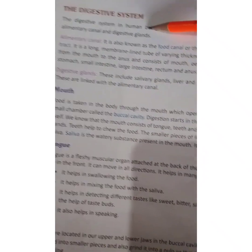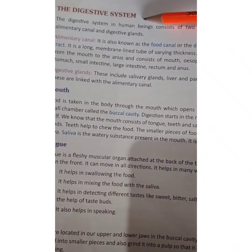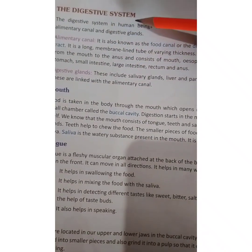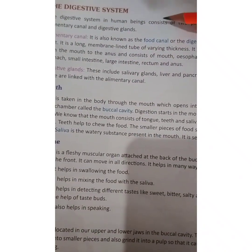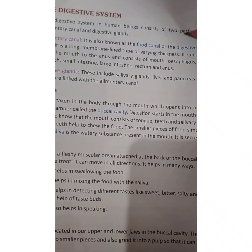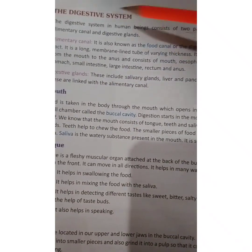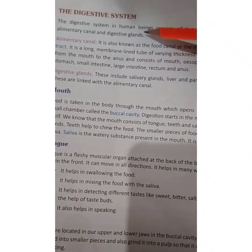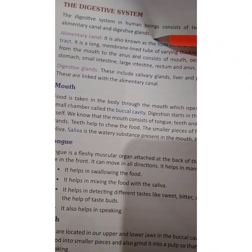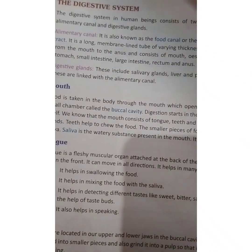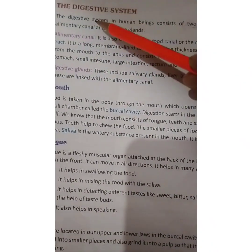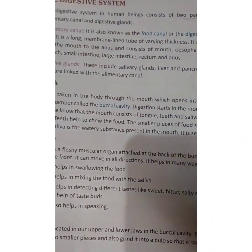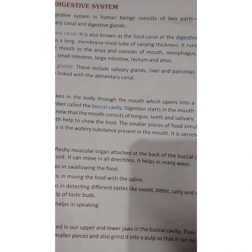We will start with the digestive system. The digestive system in human beings consists of two main parts: the alimentary canal and the digestive glands. First I will deal with the alimentary canal.